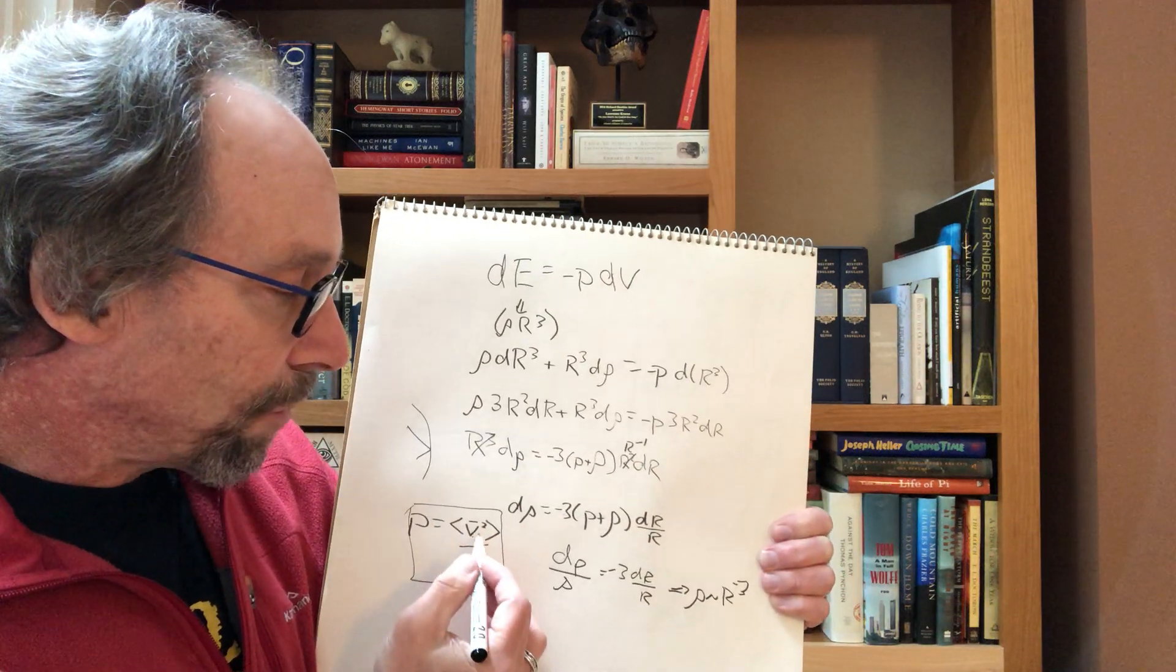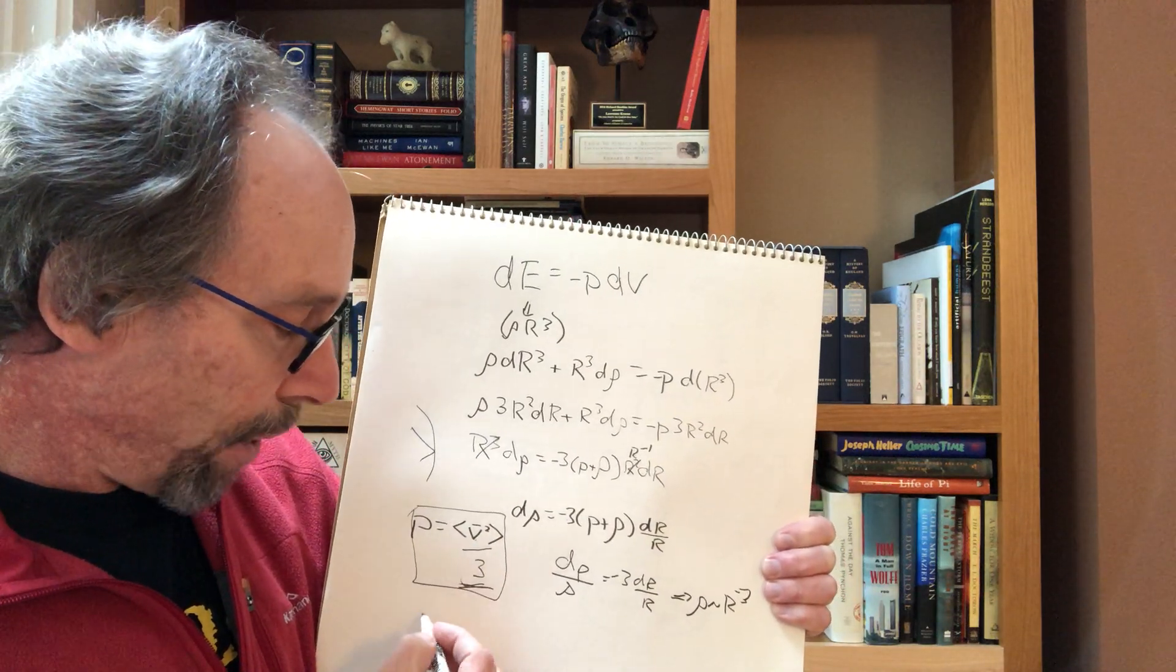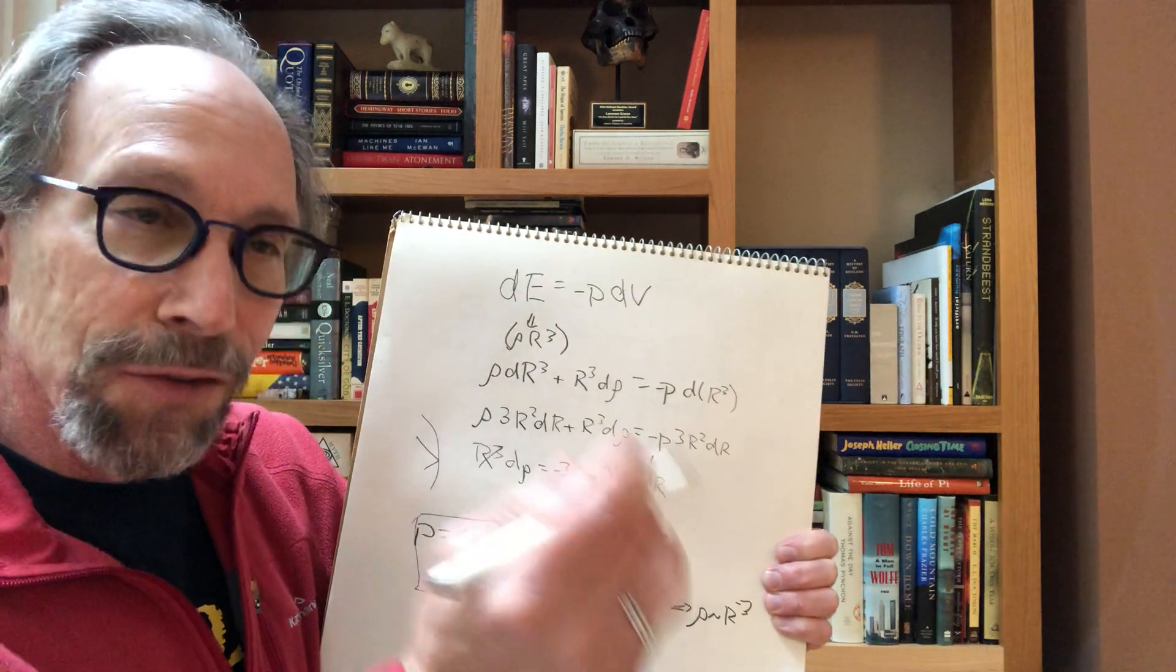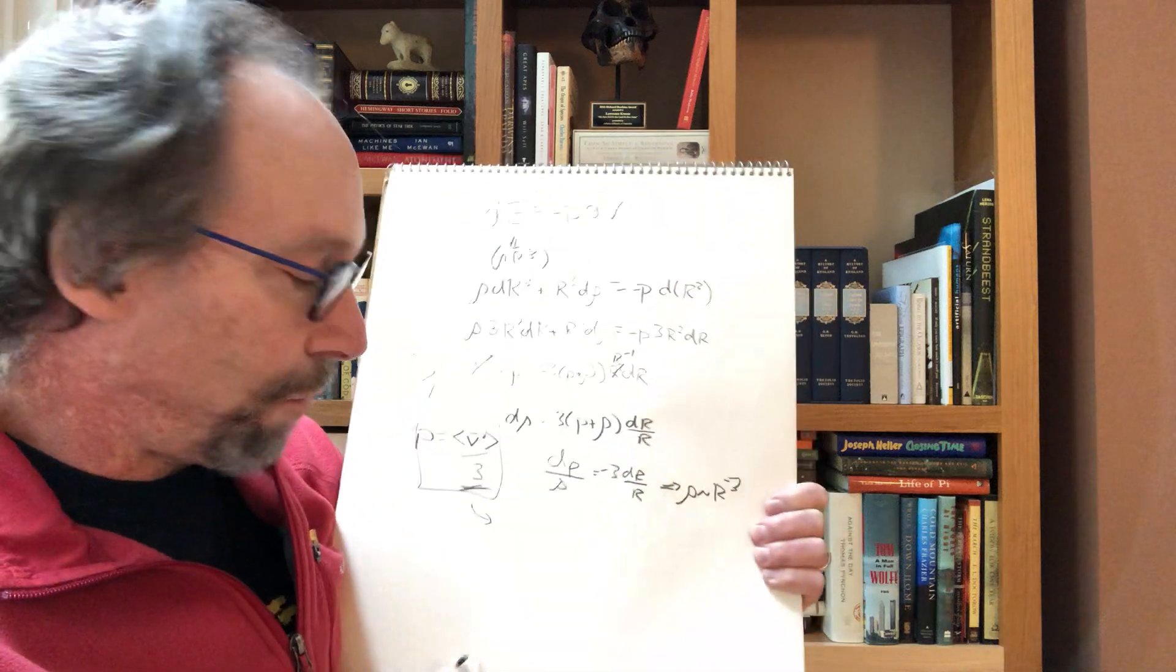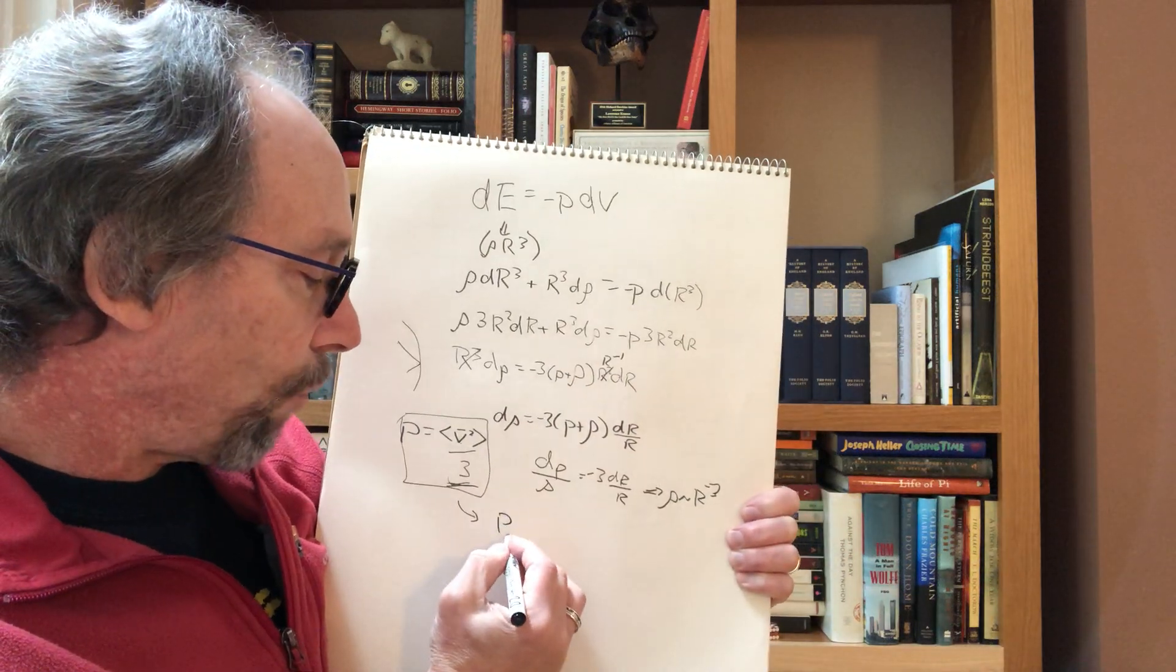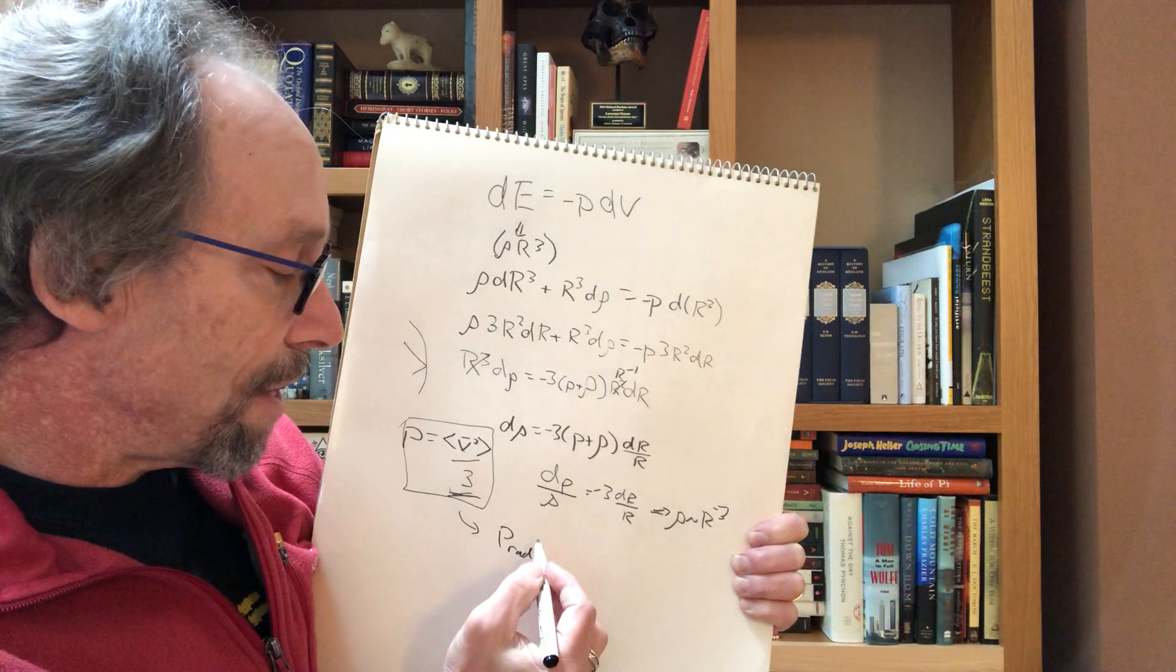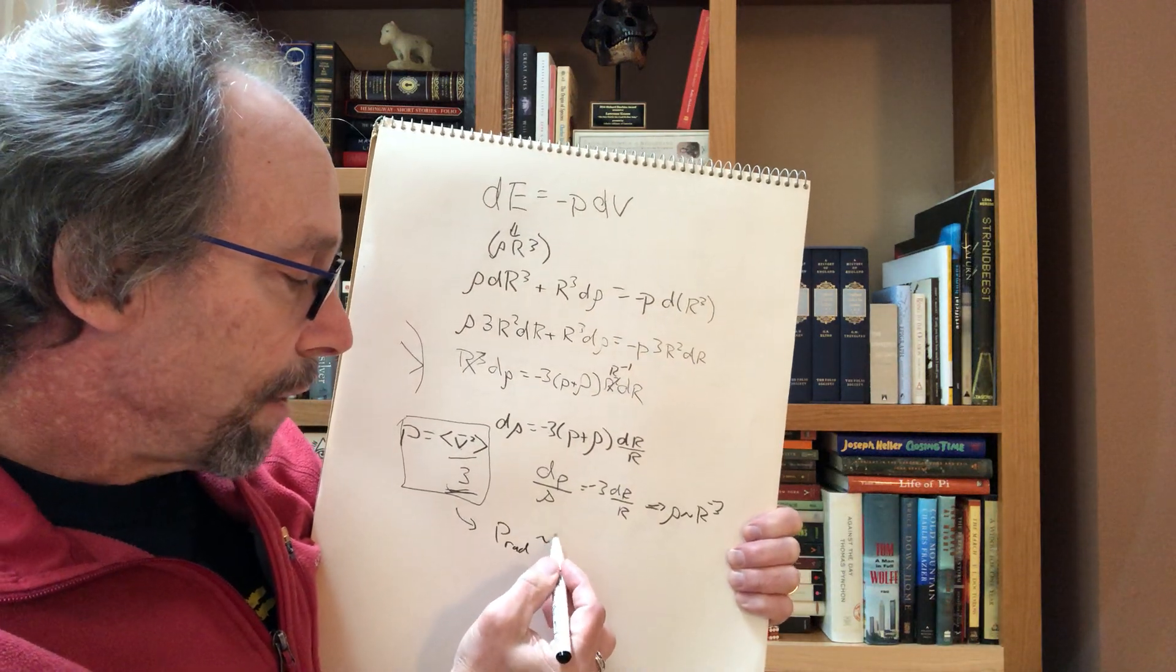Namely, if I call the speed of light one here, which is generally the easiest thing to do in relativity because then you just compare everything to the speed of light, you get that the pressure of radiation, since light is moving at speed c, and the speed of light is one here, is one-third.